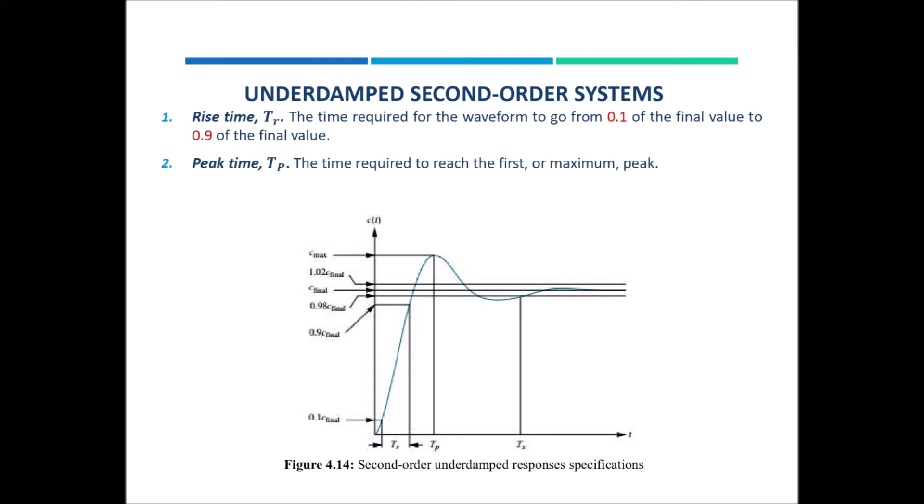The second parameter is peak time. Peak time is the time to reach the maximum peak of the output. As seen in the vertical axis, the maximum peak is located at c-max. From the point 0.98 c-final to c-max, that time is basically t of p, which is the peak time. We also have two more parameters: percent overshoot and settling time t of s, which we will discuss in the next slide.